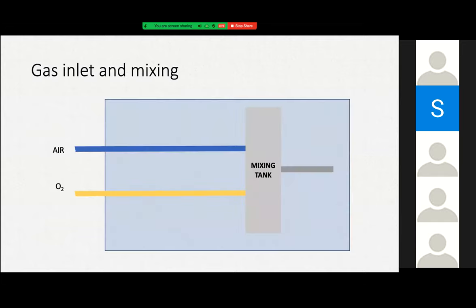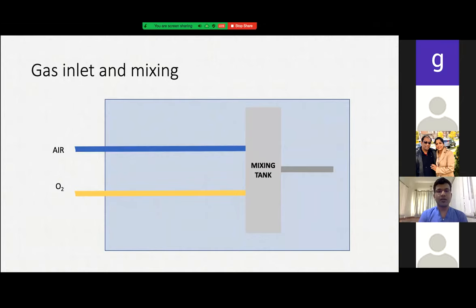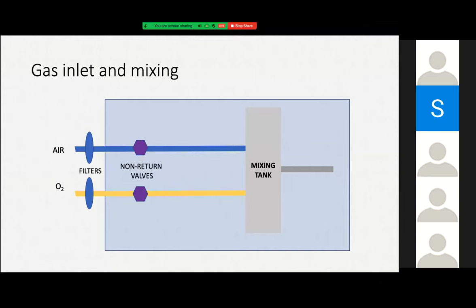Coming to the parts of the ventilator, the first part is the inputs: gas and power. The gas inlet — typically all ventilators have an air and oxygen port. Gases are filtered for any particulate material using air filters. To make flow unidirectional and prevent backflow, there are non-return valves. Flow, pressure, and volume are regulated by control valves.